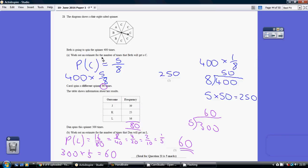Question 21. Estimate the number of times that Beth will get a C. Well, there are 5 C's out of 8. So the probability of a C is 5 out of 8, 5 eighths.